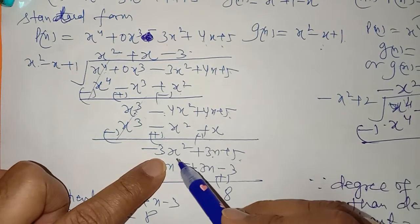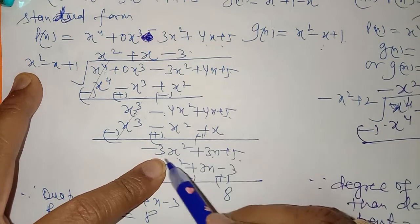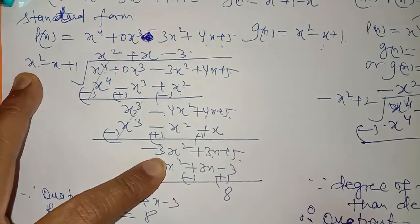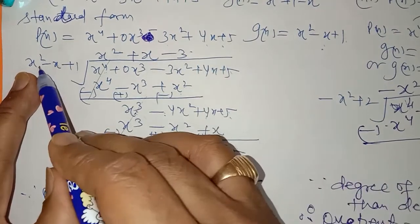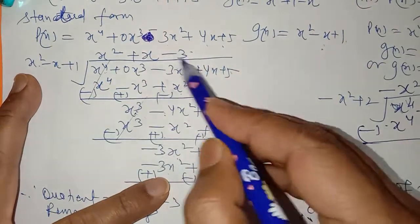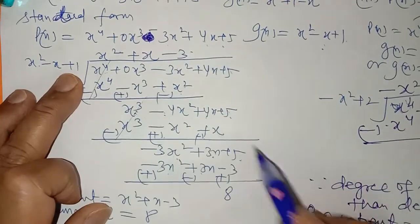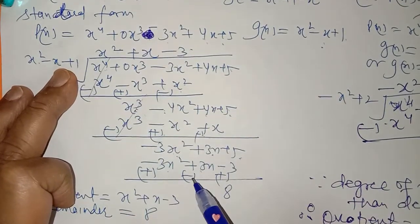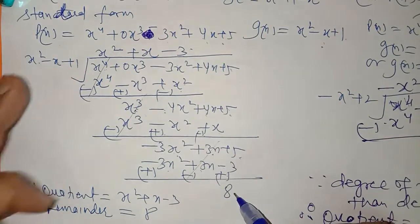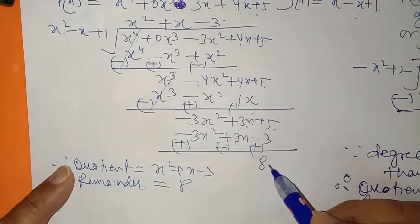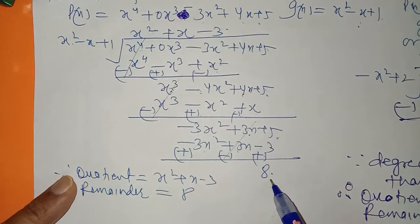Now you need minus 3x². The divisor has x², so multiply by minus 3. Multiply the divisor by minus 3: minus 3x², plus 3x, minus 3. Sign change — cancel. Plus 8 remains. So the remainder is 8.